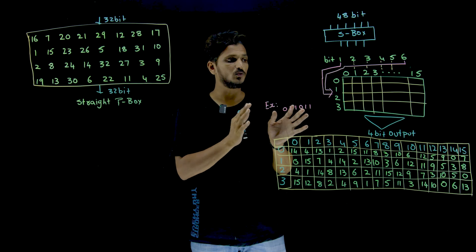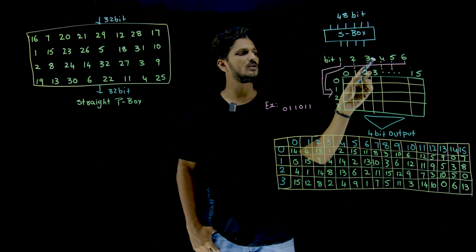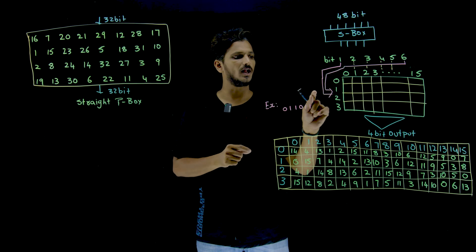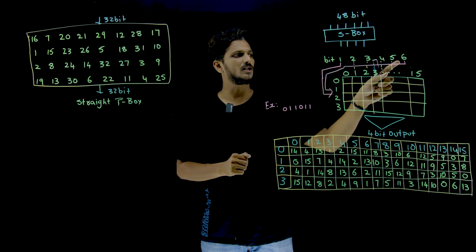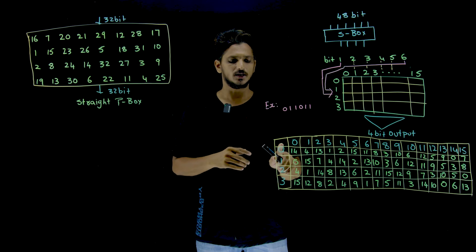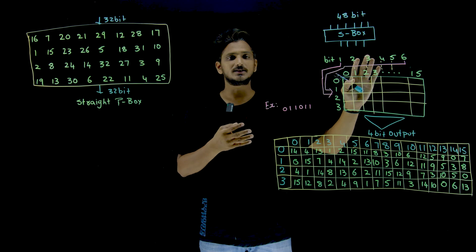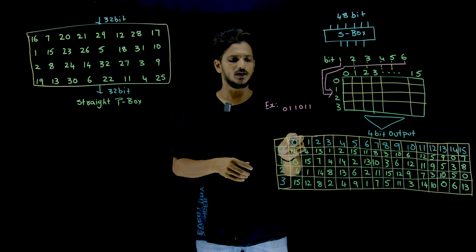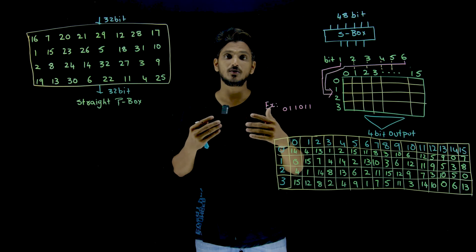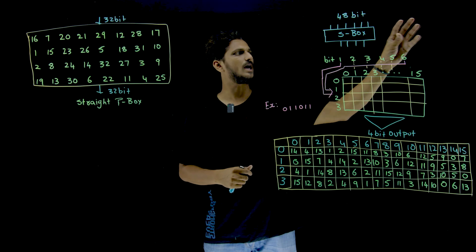Now we need to understand how this S-Box works — how 6-bits are converted to 4-bits. If you are having 6-bits as input, the first bit and last bit are considered as the index for the lines in the S-Box. With 2-bits there are 4 possibilities: 0, 1, 2, 3 — the 0th, 1st, 2nd, and 3rd lines. The middle 4-bits have 16 possibilities and are considered as the index for the column — from 0th up to 15th column. This is the S-Box table for the 1st S-Box. Like this you are going to have S-Box tables for all 8 S-Boxes. For understanding purposes, we consider only 1 S-Box.